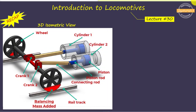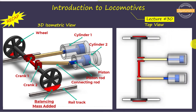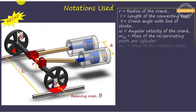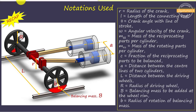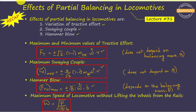This is the 3D isometric view of a two-cylinder locomotive. As you can see, we have two identical cylinders — cylinder 1 and 2 — and identical cranks — crank 1 and 2. These are two driving wheels in which balancing masses are usually added. This is the top view of the two-cylinder locomotive, showing the various notations used in this study. The formulae to determine maximum and minimum values of tractive effort, maximum swaying couple, hammer blow, and maximum speed of locomotives without lifting the wheels from the rails are all summarized from our earlier video.